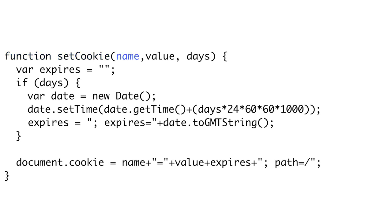We will call it setCookie, and it will take a name, value, and optionally an expiration length in days. If we omit the expires clause from our cookie string, the cookie expires as soon as the user closes the browser. In our function, we first check if our expiration in days argument is set. If so, we create a date object and set its date to the correct time in the future. We do this by adding the current time in milliseconds to the number of milliseconds in the number of days passed to the function. So we multiply our argument by 24 hours in the day, times 60 minutes in the hour, times 60 seconds in the minute, times 1,000 milliseconds in a second. We then create our expires clause by calling .toGMTString() on this new date. If the date was omitted, we simply leave it blank. Finally, we create our cookie string by joining the name, value, expires, and path info, and assign it to document.cookie.